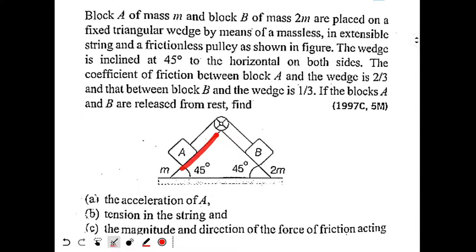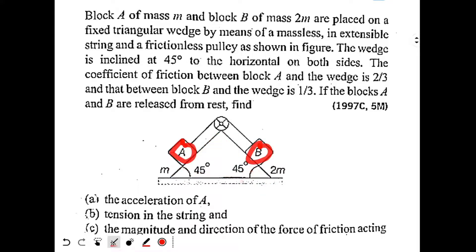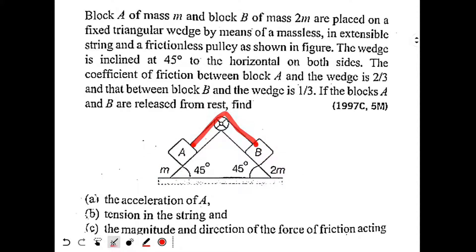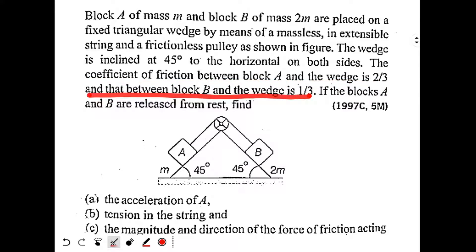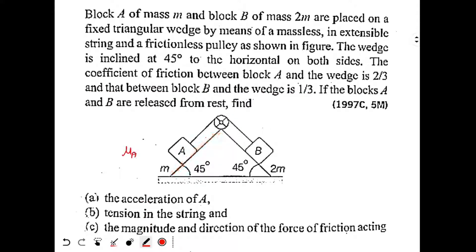We have a fixed wedge of angle 45 degrees on both sides. Block A has mass m and block B has mass 2m; they are connected by a string. The coefficient of friction between block A and the wedge is μa = 2/3, and between block B and the wedge is μb = 1/3.